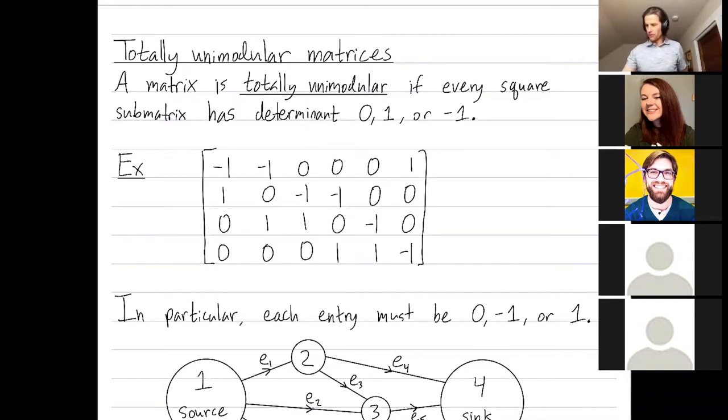So here's an example. I've drawn a matrix for you. A matrix can be totally unimodular, even if it's not square. So I can't take the determinant of a non-square matrix. But let's say I remove some of the rows and columns. So maybe I remove all but three columns, and then I also remove a row.